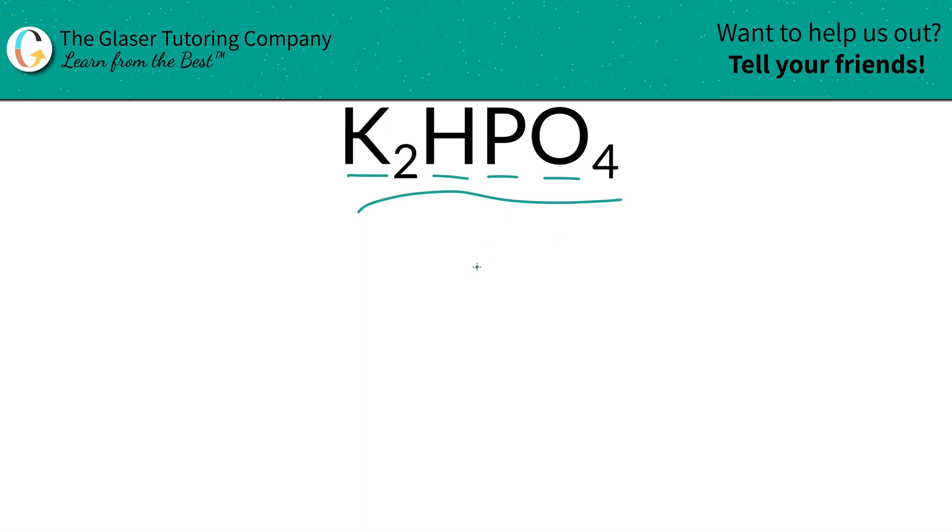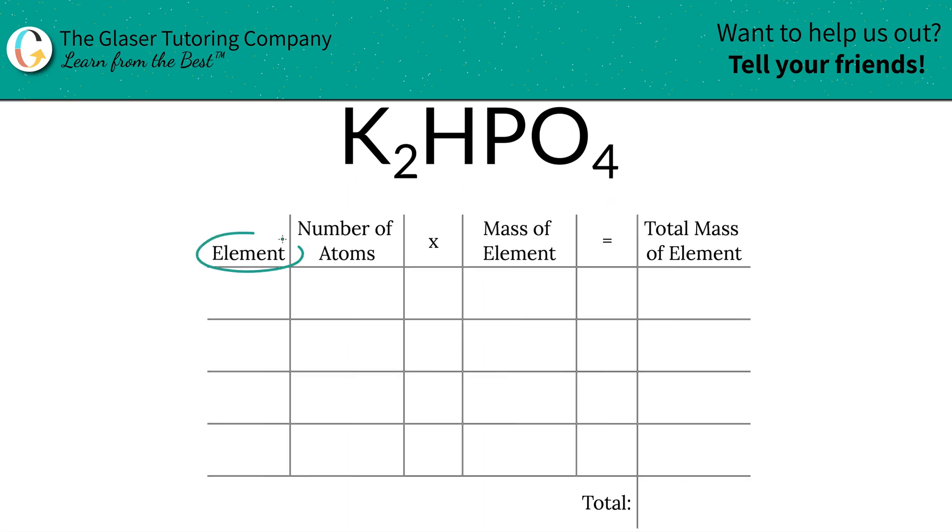First, we got to find the total mass, create a nice little tip to help us out, and then the percentages are going to be simple. So the first thing we're going to do is write the elements we see. We got potassium, hydrogen, phosphorus, and oxygen.